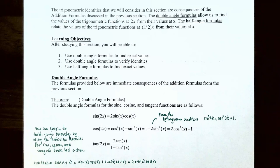As we're going to talk about in the next video, the half angle formulas relate the values of the trigonometric functions at one-half times x from their values at x. In this video we're going to talk about how to use the double angle formulas to find exact values and how to use them to verify identities.